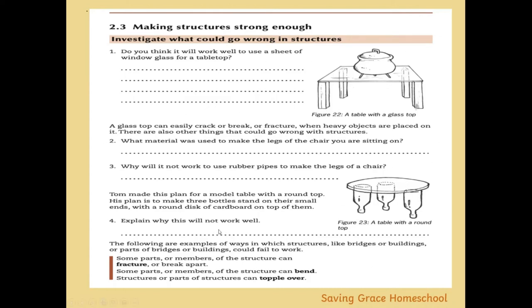This is a fairly stable desk — it doesn't twist or move easily. If you wanted to make a table, you wouldn't swap the large legs for thick pieces of rubber or rubber pipes. Rubber has no resistance to bending, so it would just flop down immediately, versus thick wood, which makes a much stronger, stable table.